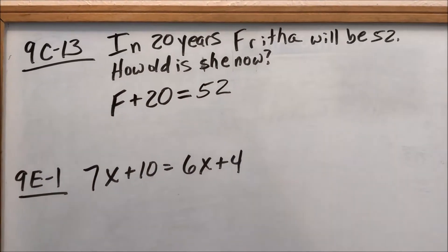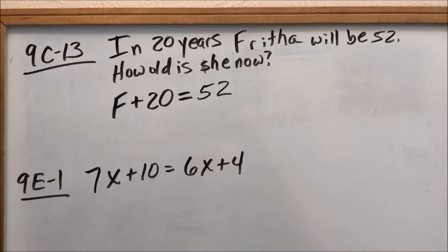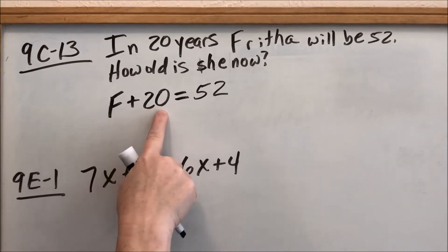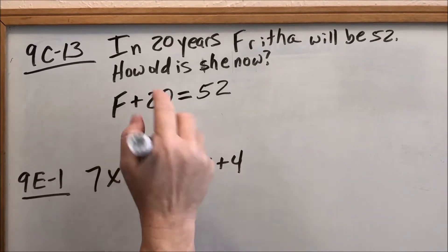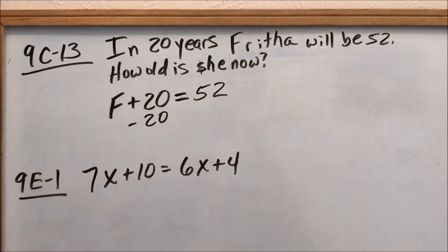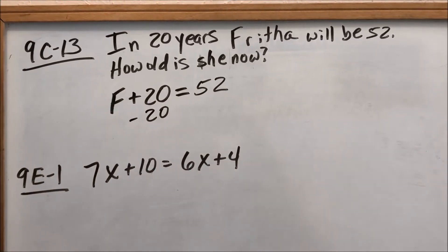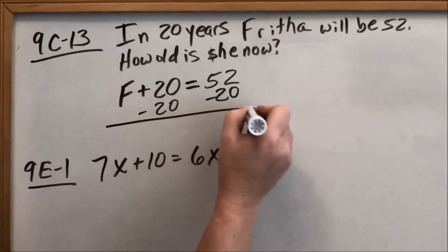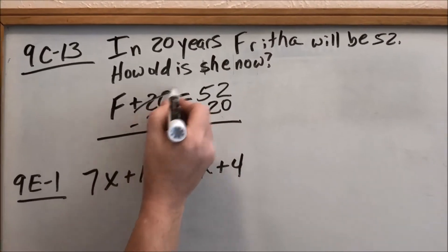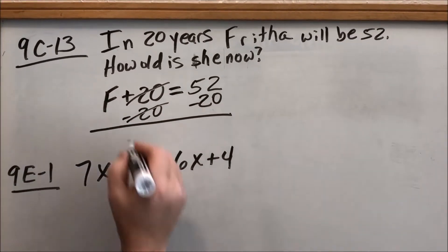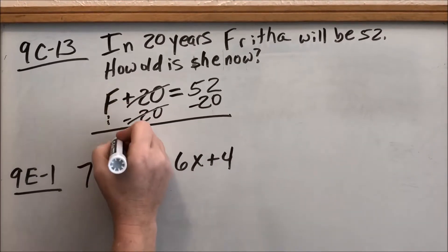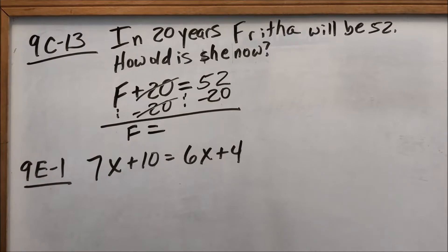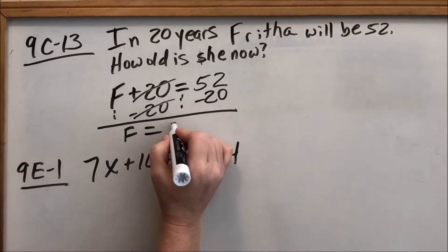So this is what we had earlier. We want to get letters on the left and numbers on the right, which means we don't want that 20 on the left. It's a positive 20, so we do the opposite — subtracting — because that will make the 20 go away. Whatever we do to the left side we have to do to the right side to keep it balanced. A positive 20 and a negative 20 cancel and equal zero, so we still have F, and 52 minus 20 is 32.